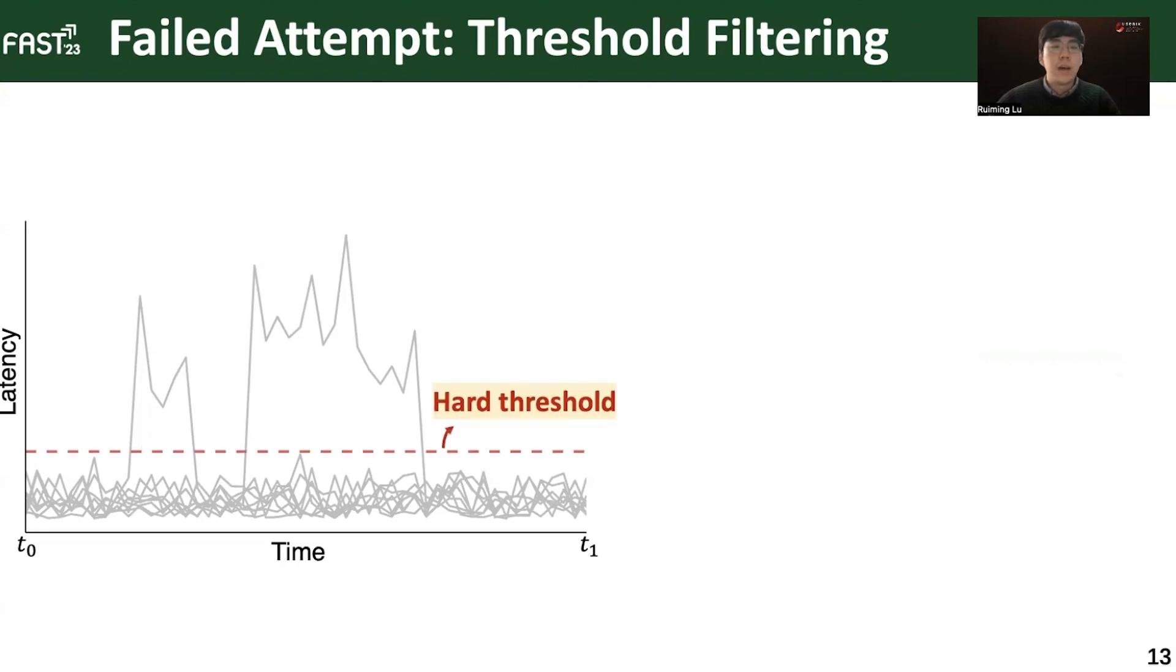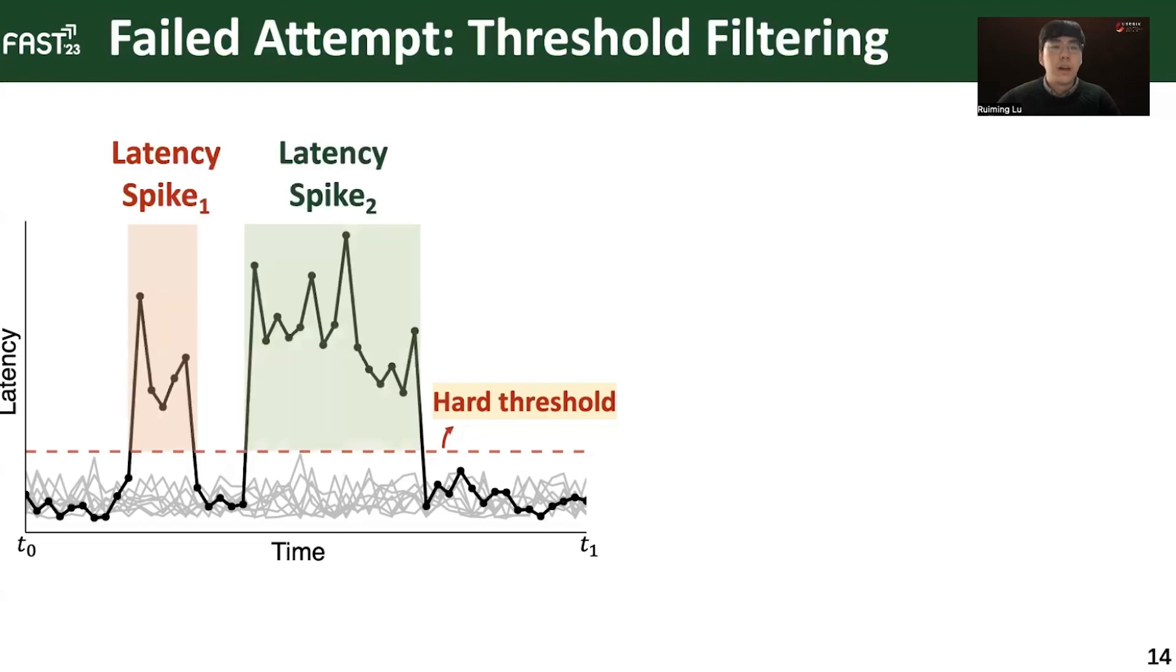To detect these two spikes, a naive approach is to set hard limits on the latency. In this case, any latency entries above the threshold are deemed as slow entries. With the hard threshold, we can easily filter out the latency spikes and capture the potentially slow drive.